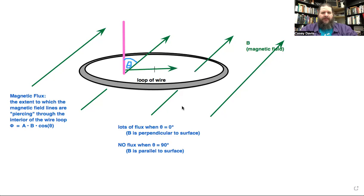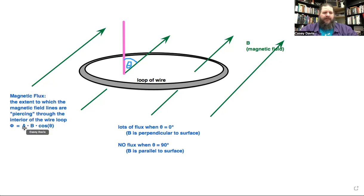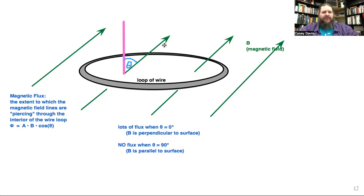That's how we define magnetic flux: Phi equals A times B times cosine theta. If it helps you remember, think of it as ABC — area times magnetic field times cosine theta. This mathematically describes the extent to which magnetic field lines are going through the interior of the loop.